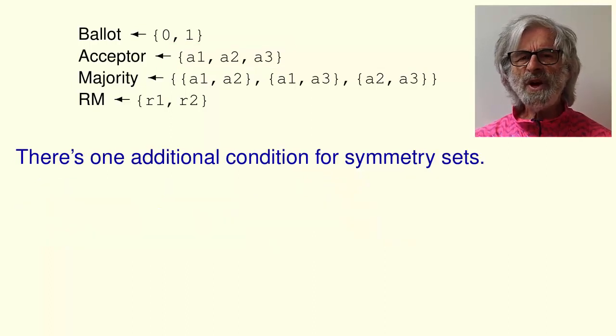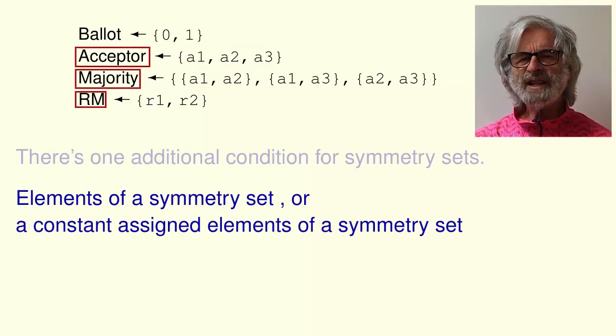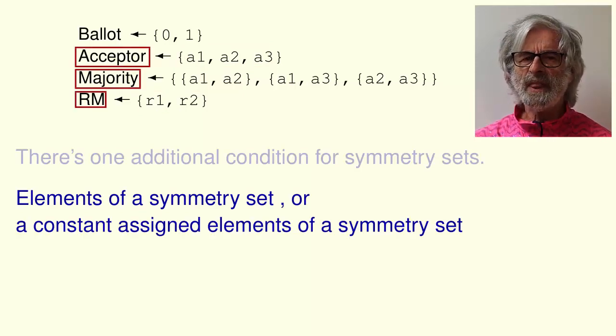In general, it's okay to use elements of a symmetry set in an expression assigned to another constant if the expression is symmetric in the elements of the symmetry set. There's just one additional condition a symmetry set must satisfy that I can now explain. Elements of a symmetry set or a constant that's assigned elements of a symmetry set may not appear in a choose expression.